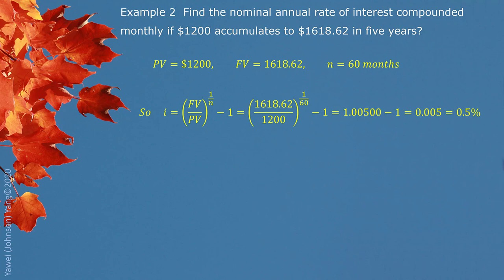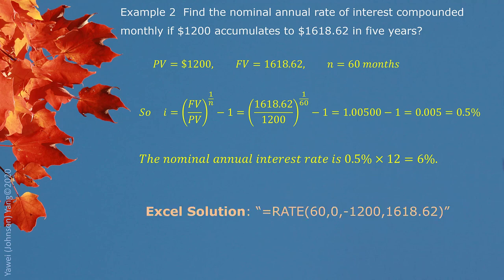Make sure we understand the 0.5% is periodic interest rate. Since the interest is compounded monthly in this case, we need to use this periodic interest rate multiplied by 12, give us 6%. Again, Excel function being provided here. You can try it out.